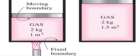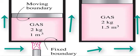Notice that energy may cross the boundary, and part of the boundary, the inner surface of the piston in this case, may move. Everything outside the gas, including the piston and the cylinder, is the surroundings.